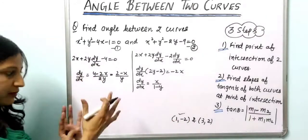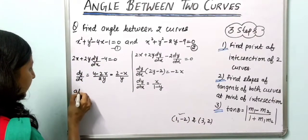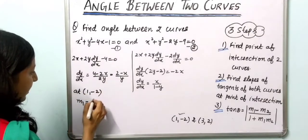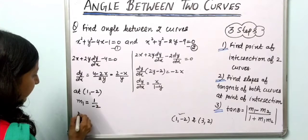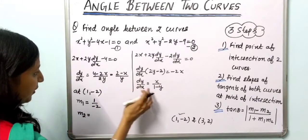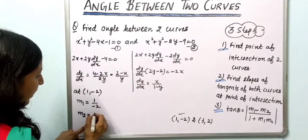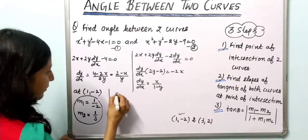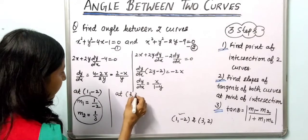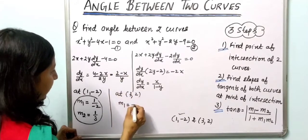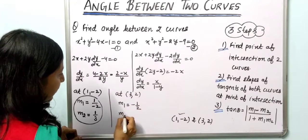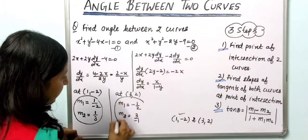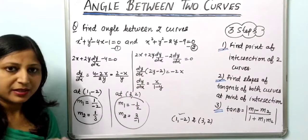At the point (1, −2): for the first curve, m1 = (2−1)/(−2) = −1/2. For the second curve, m2 = 1/(1−(−2)) = 1/3. At the point (3, 2): for the first curve, m1 = (2−3)/2 = −1/2. For the second curve, m2 = 3/(1−2) = −3. So we have determined the slopes at both points of intersection.